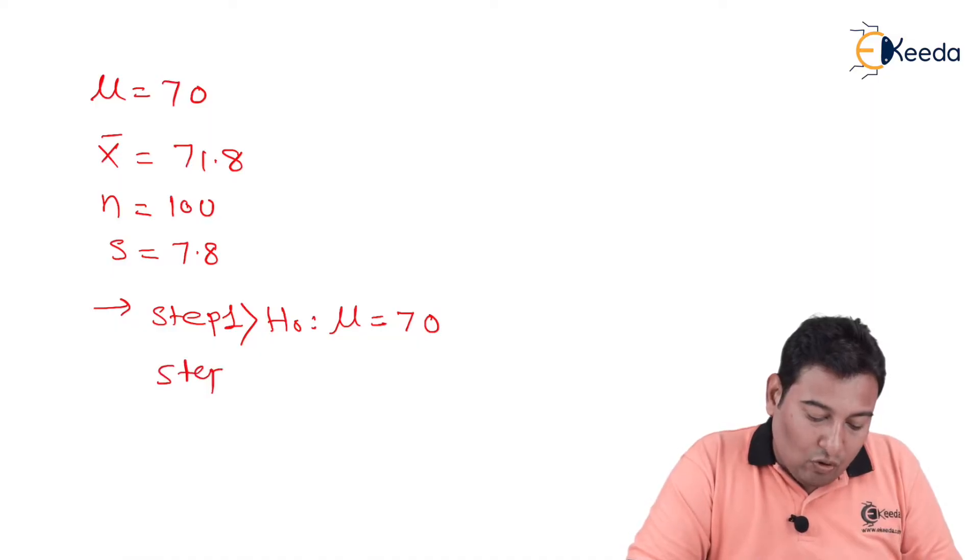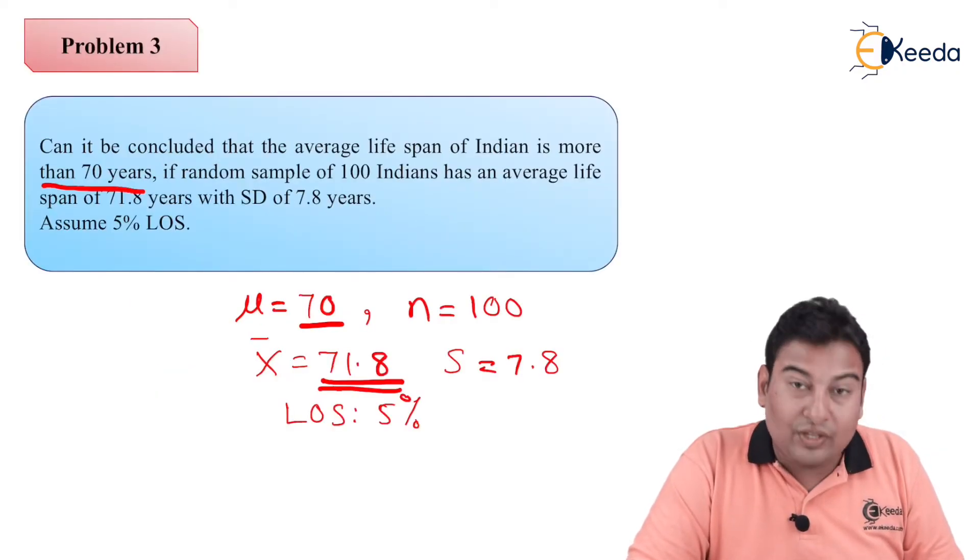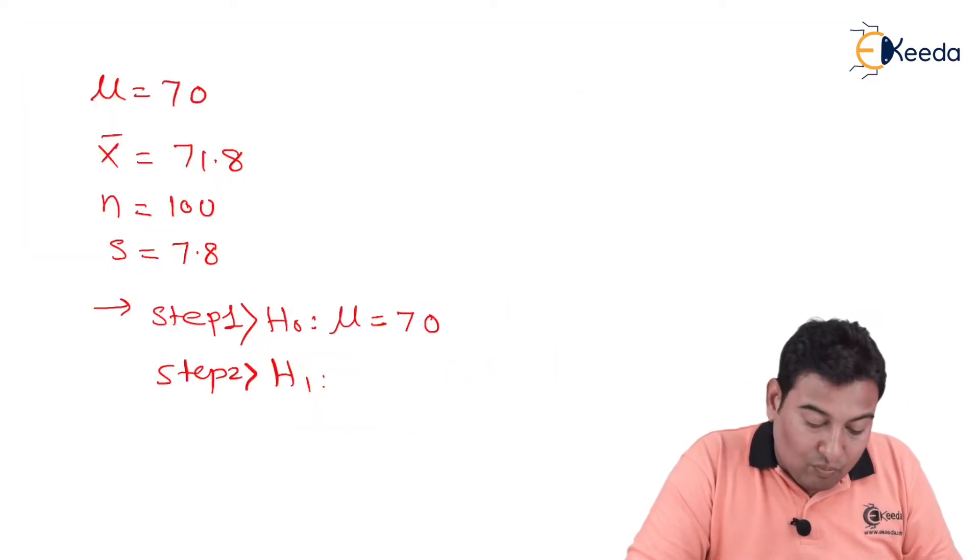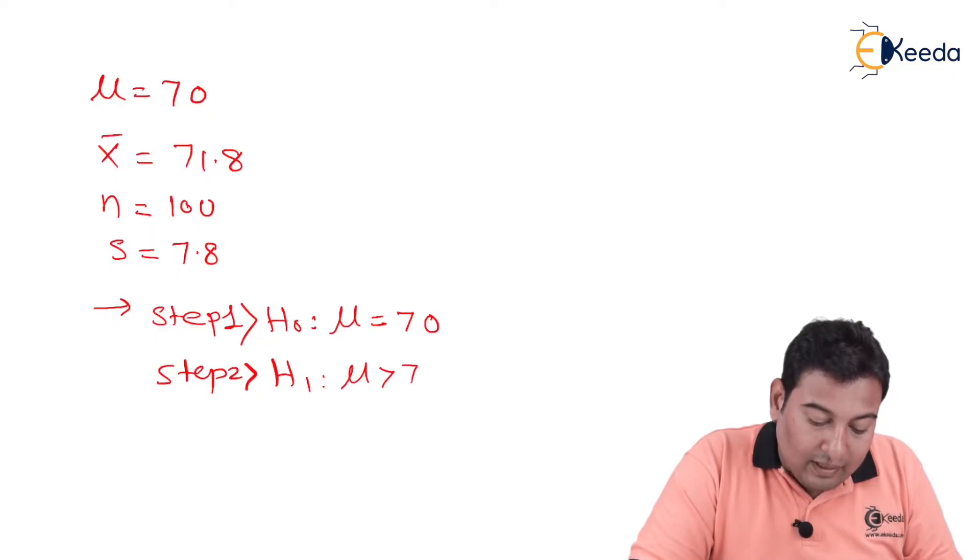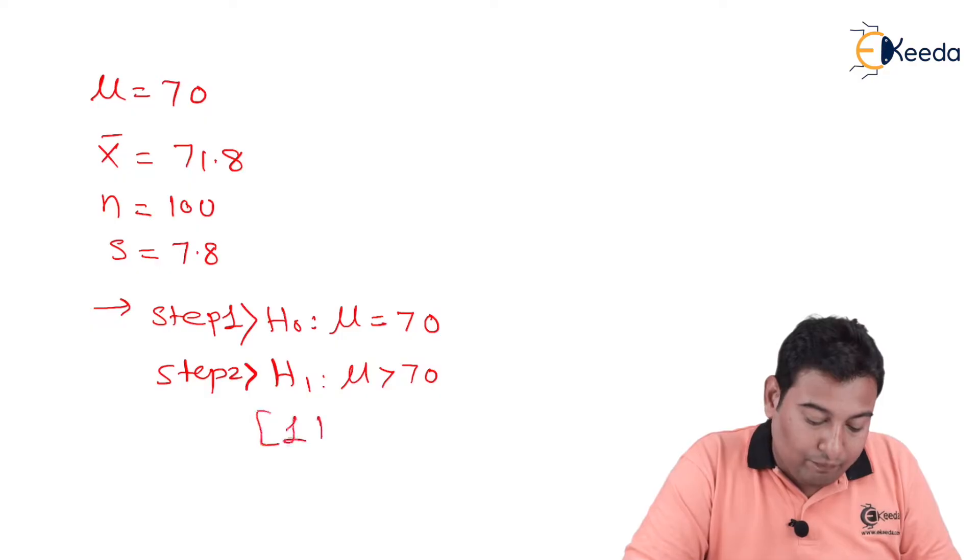Step number 2 is your alternate hypothesis, H₁. We know there are 3 options: not equal to, less, or greater. So in the given problem, it is asked more than 70 years, and as we discussed, more implies greater, and this greater implies one-tail test. So this is one-tail test.